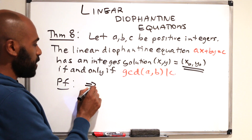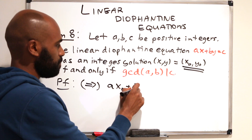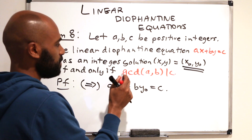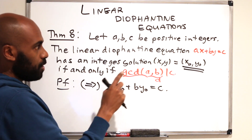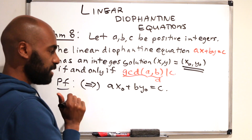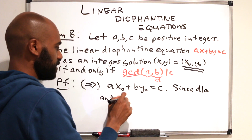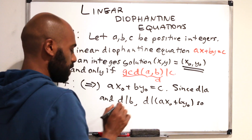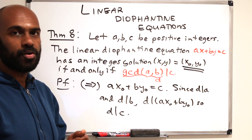We start with the forward direction, assuming we have a particular solution x₀, y₀ such that ax₀ + by₀ = c. Let d = GCD(a, b). Since d divides a and d divides b, d divides any integer combination, so d divides ax₀ + by₀, which gives us d divides c. We handled the rigorous divisibility argument in an earlier video, so we leave that detail aside.